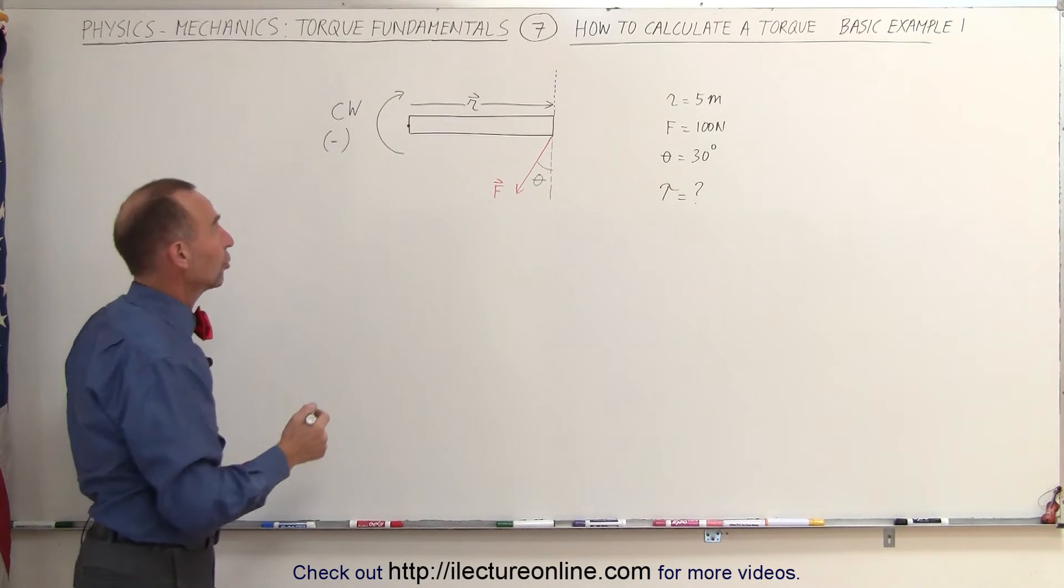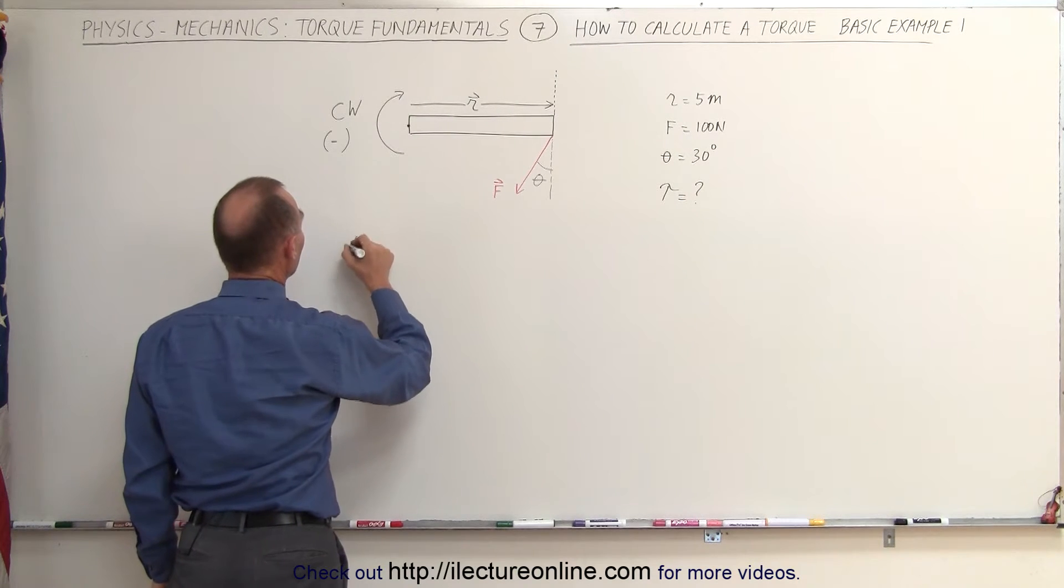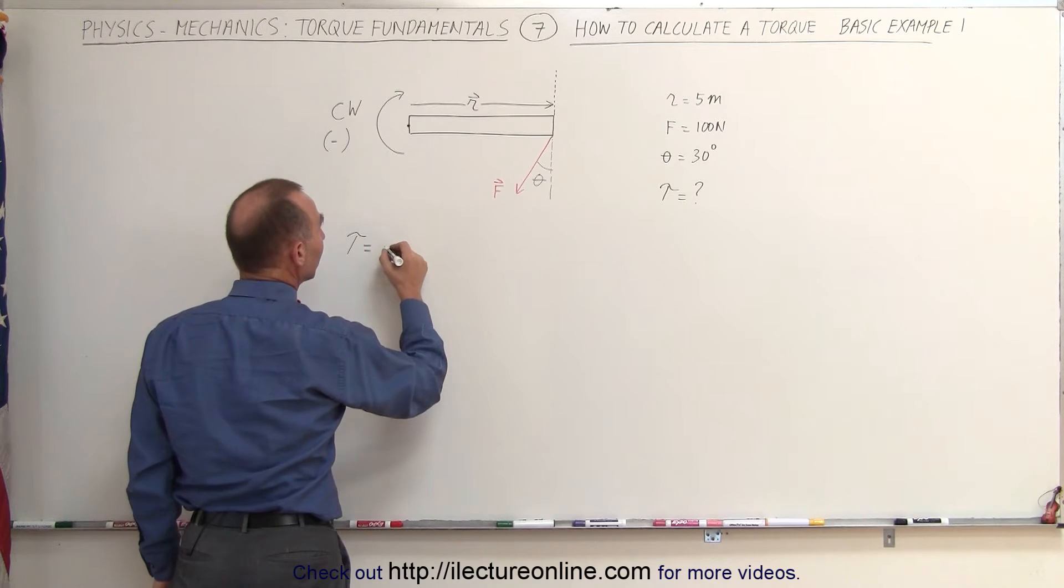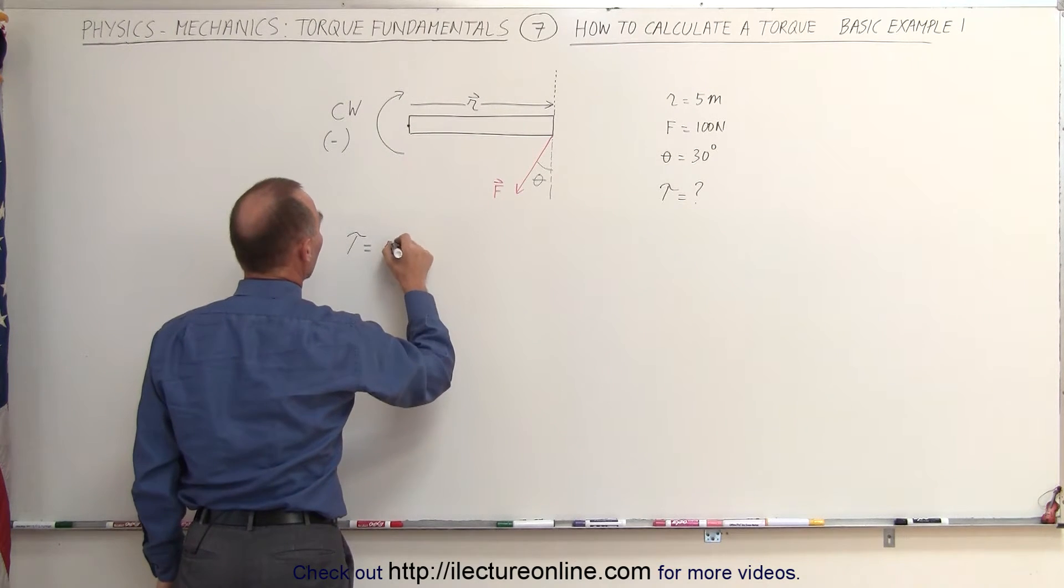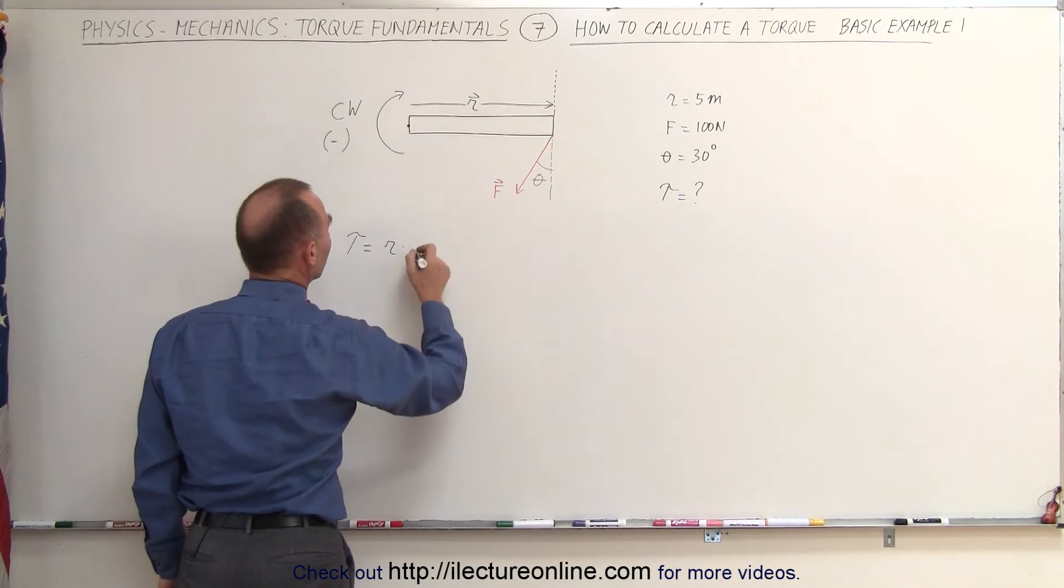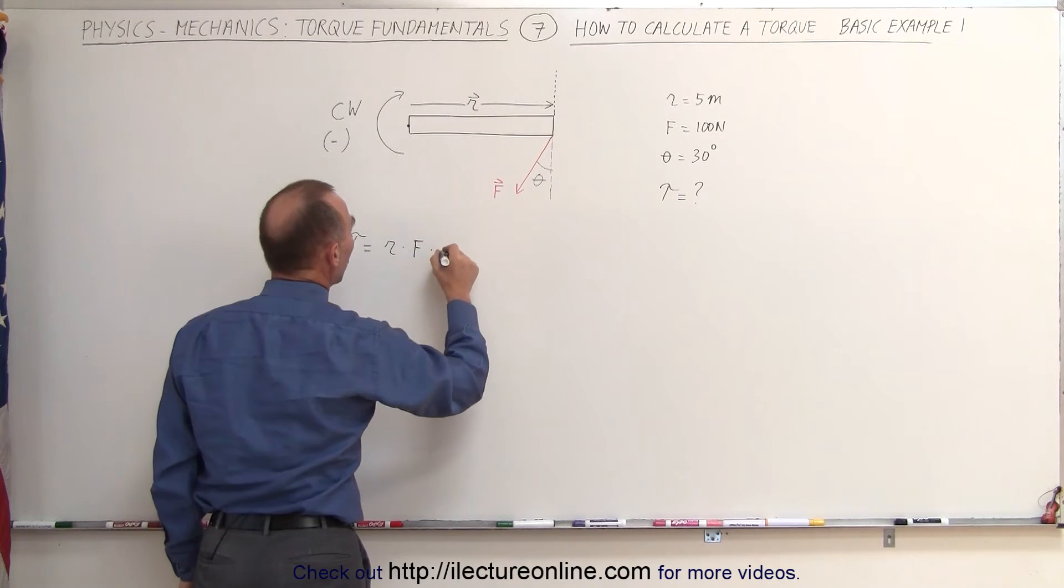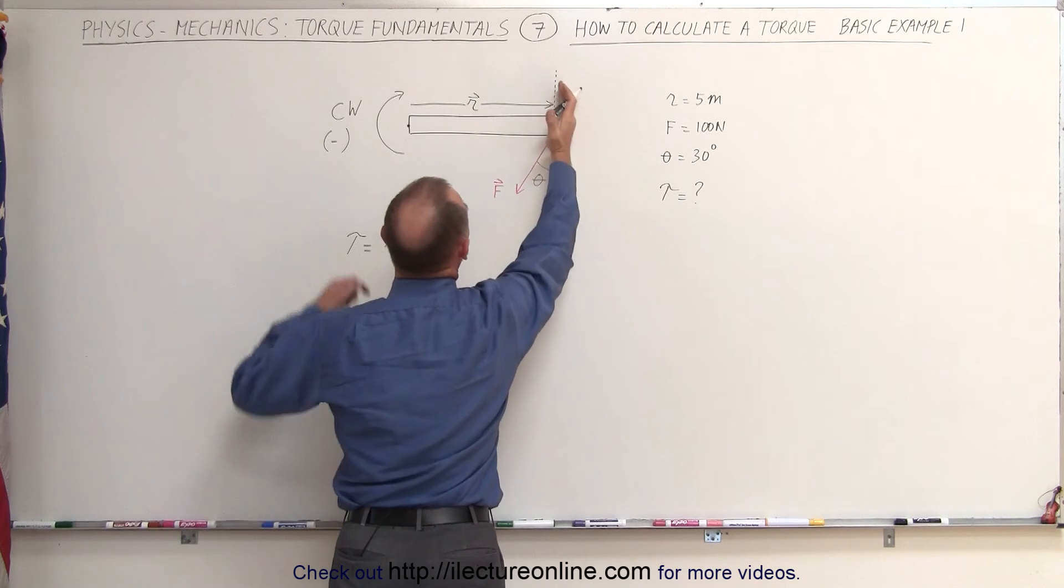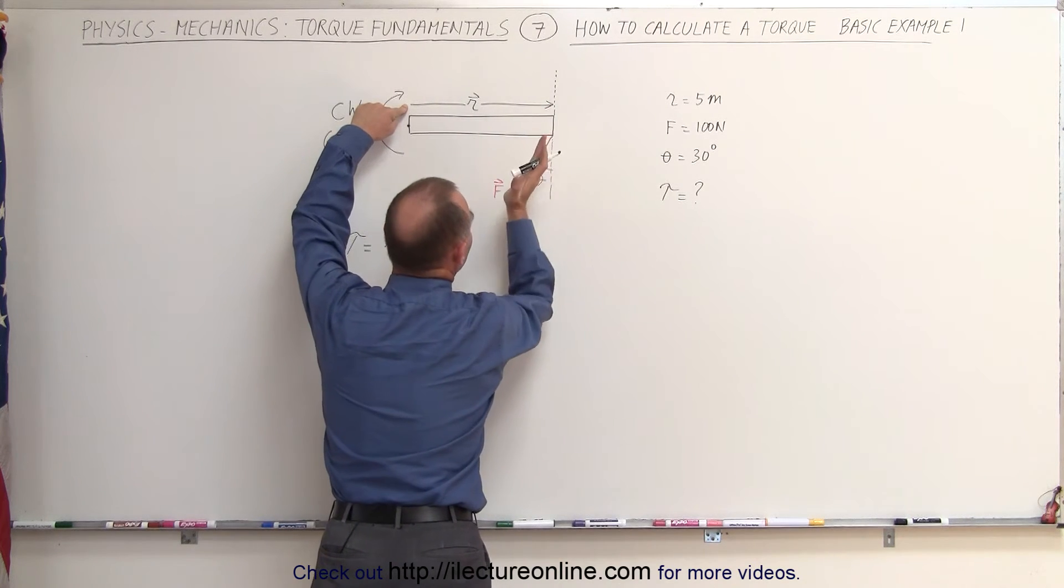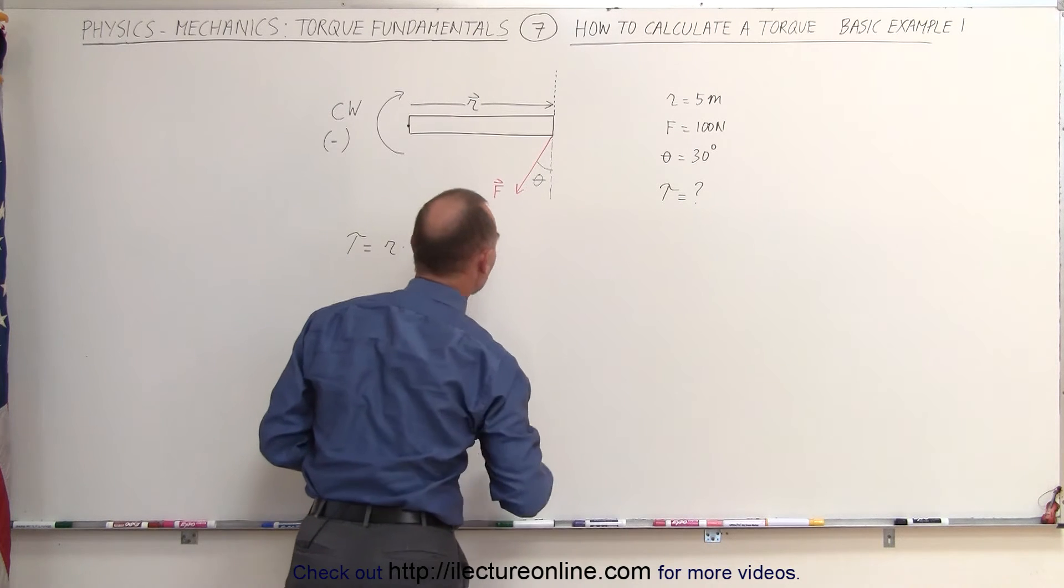Next, we need to find the equation. The magnitude of the torque is equal to R times the magnitude of the force F times the cosine of the angle between the perpendicular to the position vector and the direction of the force, which is theta in this case.